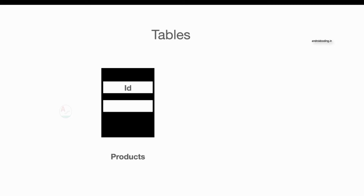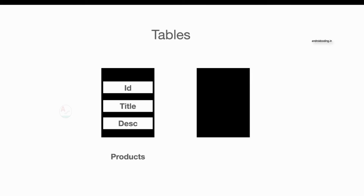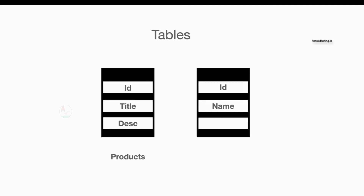The first table is 'products', and inside it we are going to have three columns: id, title, and description. The second table is 'details', which will have an id, a name column, and also a product_id column.